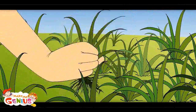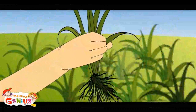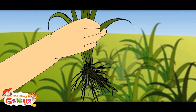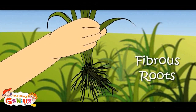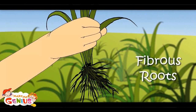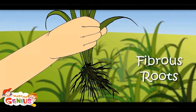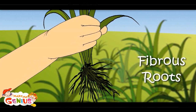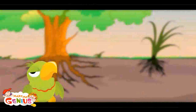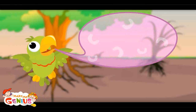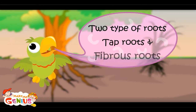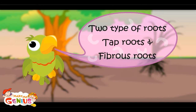Small plants have fiber-type roots. These are called fibrous roots. As the plants are not large in size, the small plants have these fiber-type roots. So there are two types of roots: tap roots and fibrous roots.